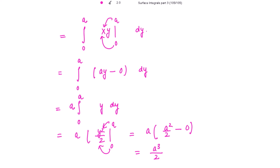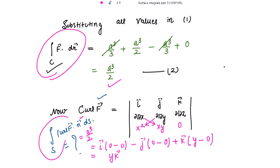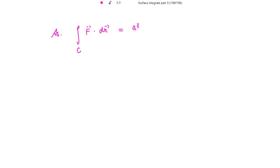The surface integral also equals a³/2, the same as the line integral. So both the left-hand side and right-hand side of the Stokes theorem are equal, both equaling a³/2. Hence the Stokes theorem is verified, as the line integral of f vector dot dr vector equals the surface integral of curl f vector dot n vector ds, both equal to a³/2.